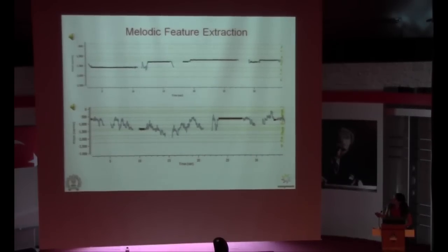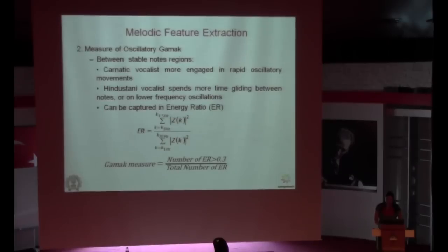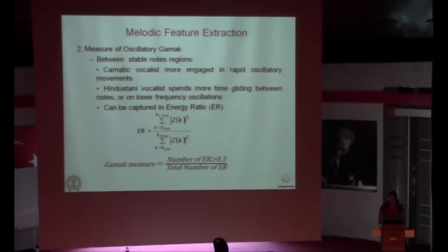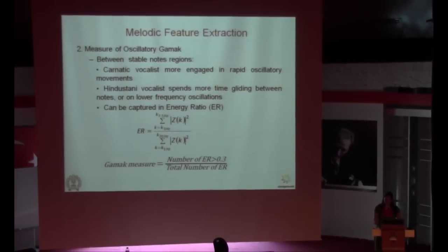Here we can see the stable notes marked in black for both styles as described by the previous measure. For the measure of oscillatory gamak, there is a perception that Carnatic vocalists are more engaged in rapid oscillatory movements while Hindustani vocalists spend more time gliding between the notes. This can be captured from the ornamented regions. We have calculated for each one-second window the energy ratio, which captures the oscillatory parts.